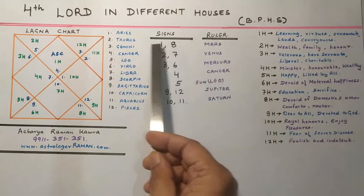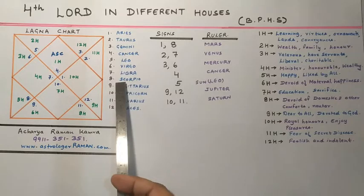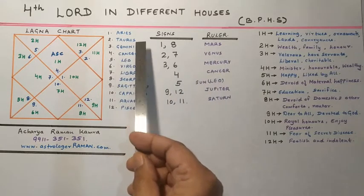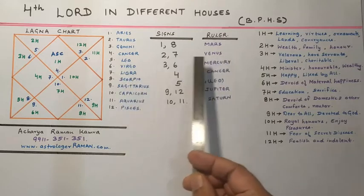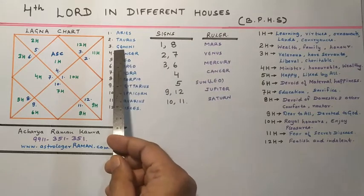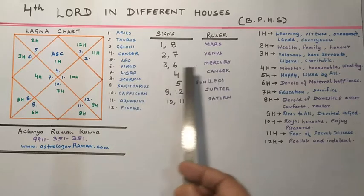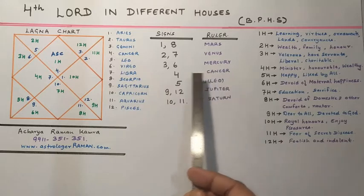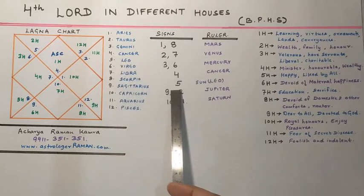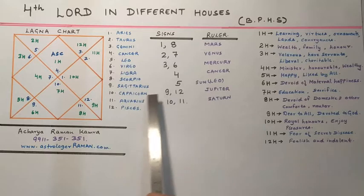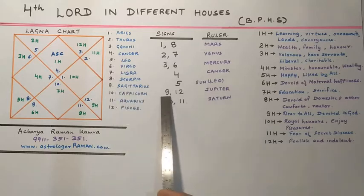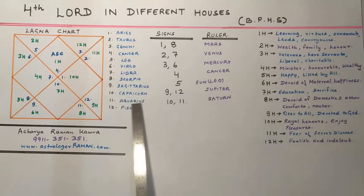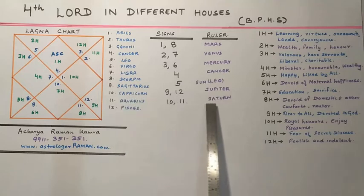The lord of 1 and 8 — Aries and Scorpio — is Mars. The lord of 2 and 7 — Taurus and Libra — is Venus. The lord of 3 and 6 — Gemini and Virgo — is Mercury. The lord of Cancer, the 4th sign, is Moon. The lord of Leo, the 5th sign, is Sun. The lord of Sagittarius and Pisces, 9th and 12th, is Jupiter. And for Capricorn and Aquarius, 10th and 11th, the lord is Saturn.